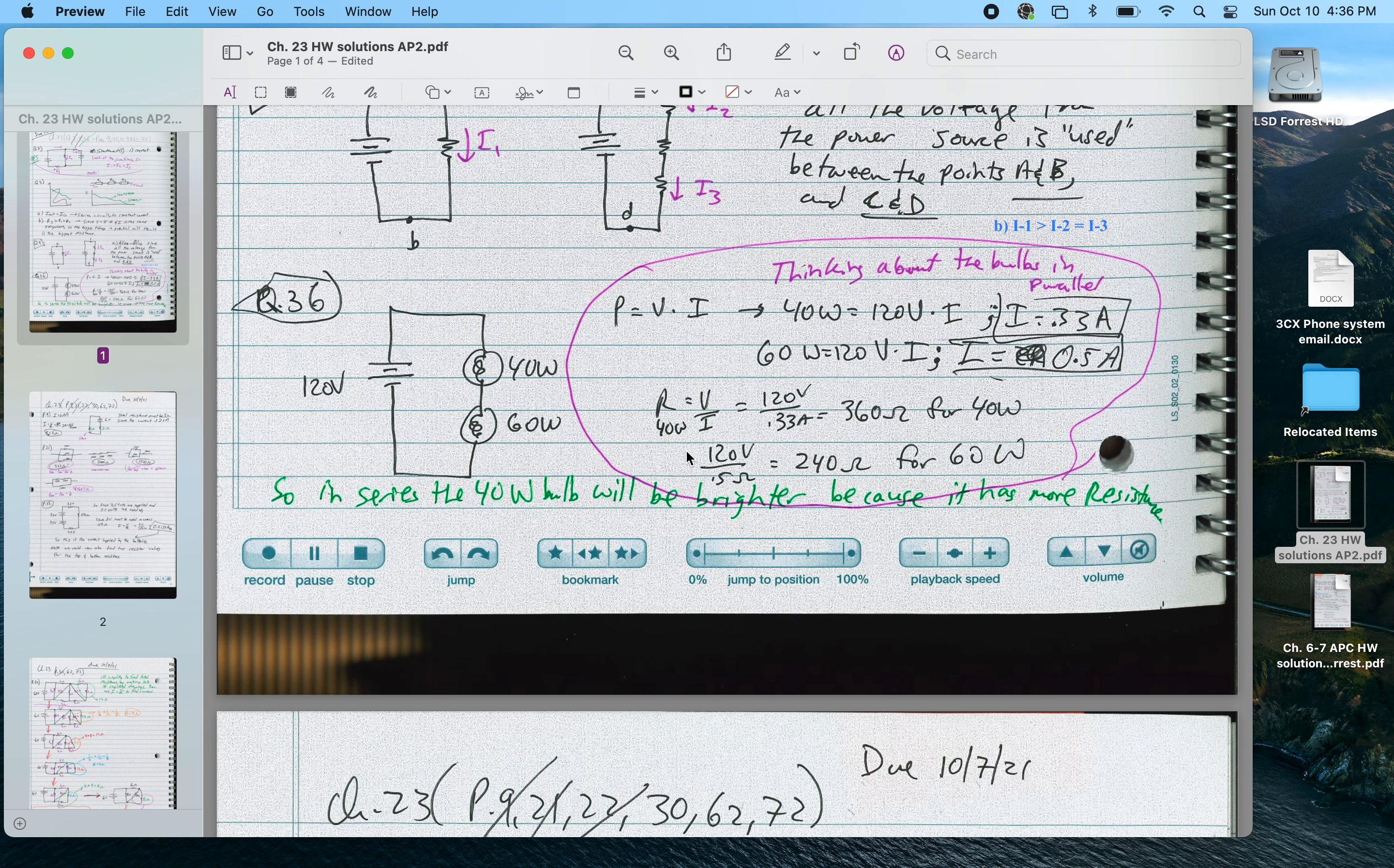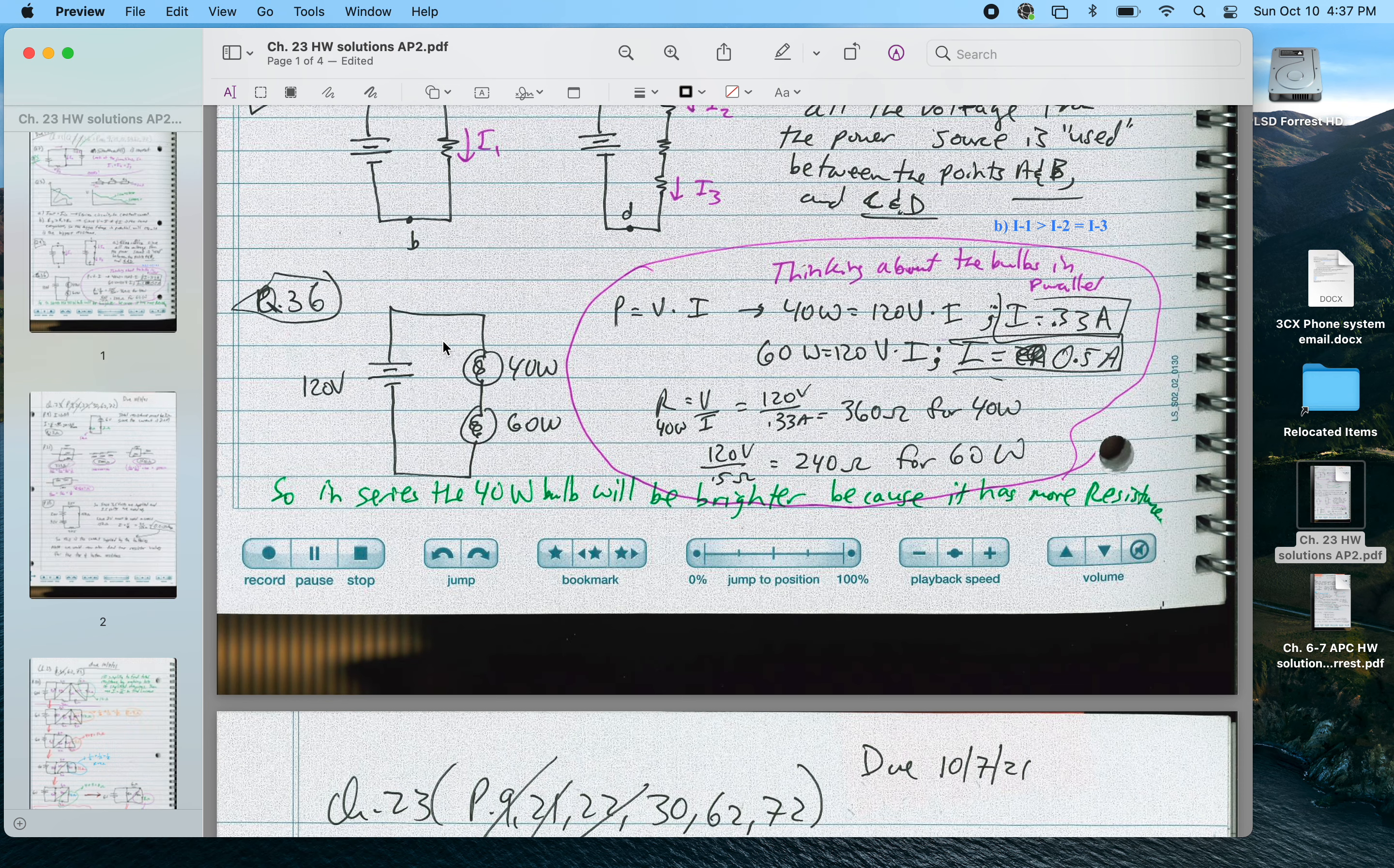36, we had a good discussion about. So in series, the 40-watt bulb is going to be brighter. The reason is normally these bulb ratings, in terms of power, are in terms of parallel circuits because that's how our homes are wired. So you could go back and figure out that the resistance in a 40-watt bulb, P equals V times I, and then V equals I times R. Or you could say P equals V squared divided by R. Either way, you can figure out the resistance. That ends up being 360 ohms for a 40-watt bulb, 240 ohms for a 60-watt bulb.